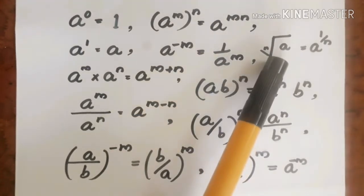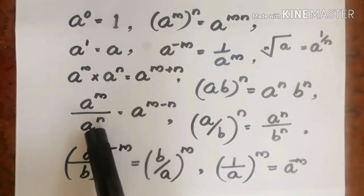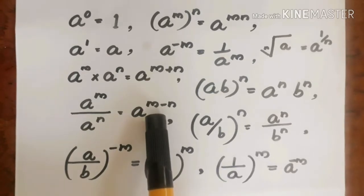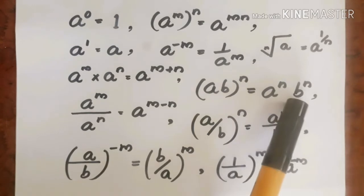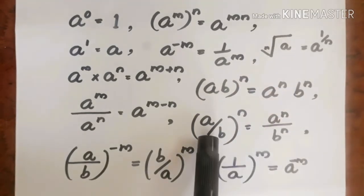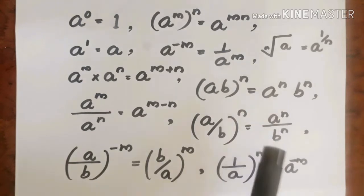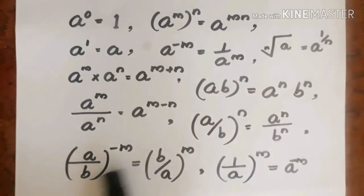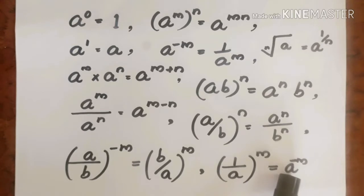The nth root of a is equal to a raise to 1 by n. a raise to m divided by a raise to n is equal to a raise to m minus n. (ab) raise to n equals a raise to n into b raise to n. (a/b) raise to n equals a raise to n divided by b raise to n. (a/b) raise to minus m equals (b/a) raise to m. 1 by a raise to m equals a raise to minus m.